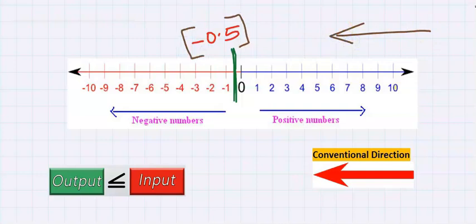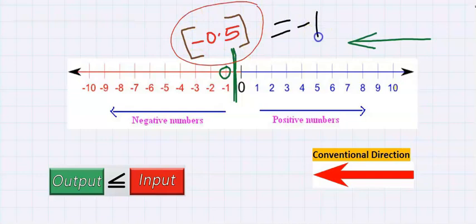The result must be an integer. The next integer going towards this direction after minus 0.5 is minus 1. Hence, everything here becomes minus 1. That is, the greatest integer function of minus 0.5 is minus 1.